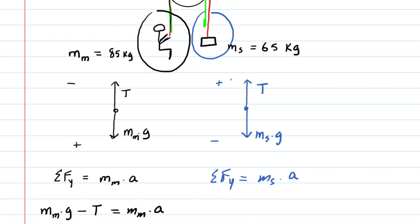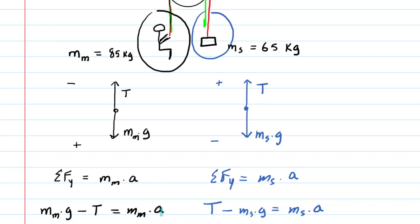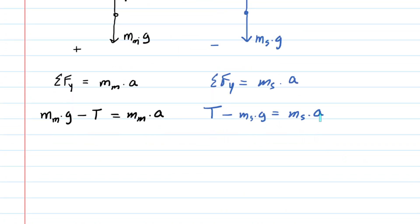So here we have the positive tension force minus the gravitational force, so m_s g, and then this is equal to the mass of the sandbag times the acceleration. Another thing to notice, just like the tensions are the same in each equation, the accelerations are going to be the same as well, because the sandbag and the man are connected by that one rope. So they're accelerating as a system, basically. So whatever the acceleration of the sandbag would be equal to the acceleration of the man.